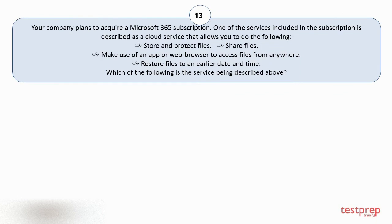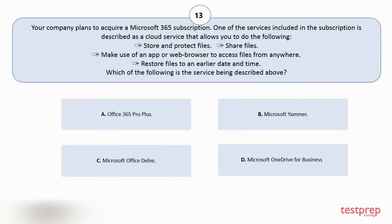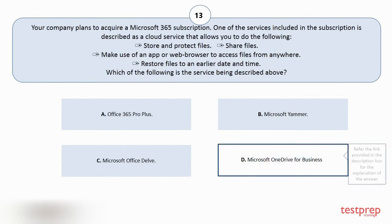Question number thirteen. Your company plans to acquire a Microsoft 365 subscription. One of the services included is described as a cloud service that allows you to: 1. Store and protect files. 2. Share files. 3. Use an app or a web browser to access files from anywhere. 4. Restore files to an earlier date and time. Which of the following is the service being described? Your options are: A. Office 365 Pro Plus. B. Microsoft Yammer. C. Microsoft Office Stealth. D. Microsoft OneDrive for Business. The correct answer is option D.